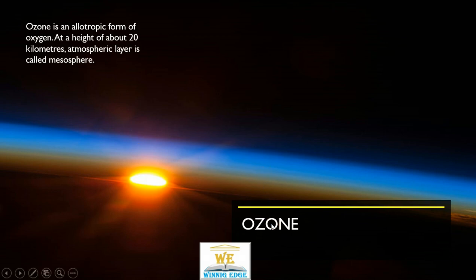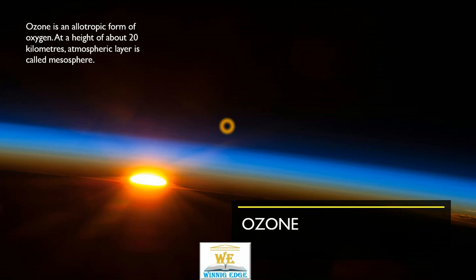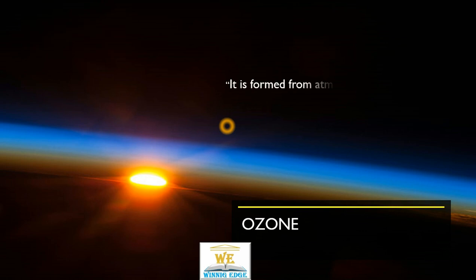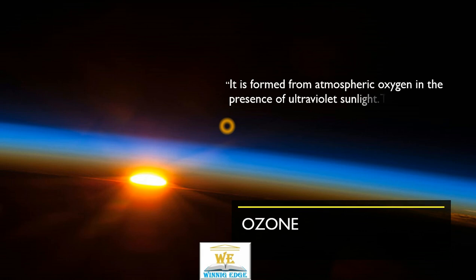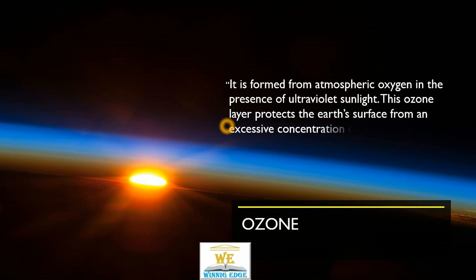Another important Group 16 compound is ozone. Ozone is an allotropic form of oxygen. It is naturally formed at about 20 km above the Earth's surface in an atmospheric layer known as the stratosphere. This ozone layer is responsible for protecting life from dangerous ultraviolet light coming from the sun, and is naturally formed by reaction of oxygen with ultraviolet radiation, effectively acting as a filter for Earth.